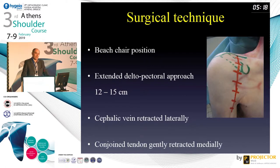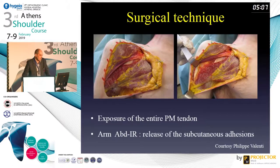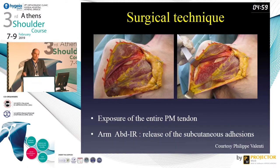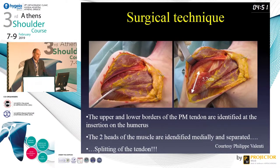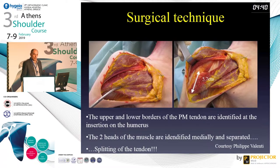In the cadaver lab approach, if you want to harvest the pec major, you have to make a deltopectoral approach and go distally to increase your incision and control everything. You can see very quickly the pec major medially from the cephalic vein. If you put the arm in abduction and internal rotation, you can release deeper and medially your tendon. You have to go medially between the two portions of the pec major to understand how it will go laterally, otherwise you will make mistakes when you harvest it.